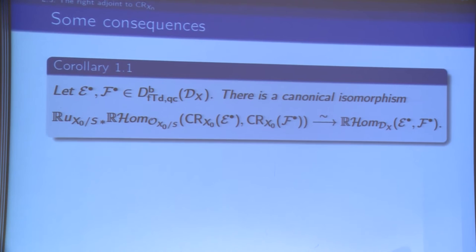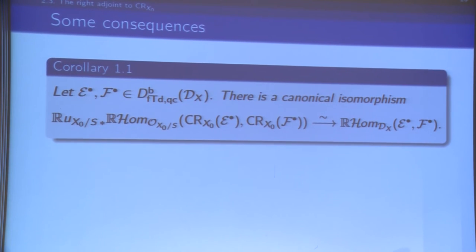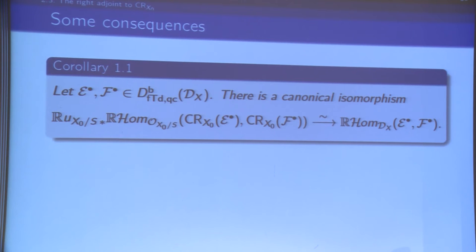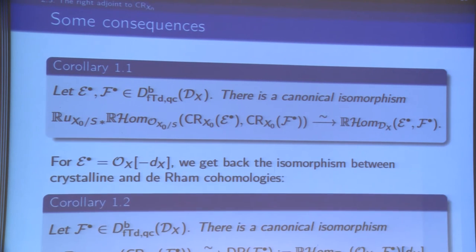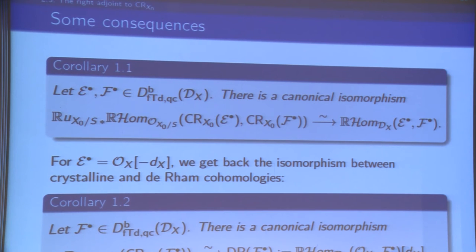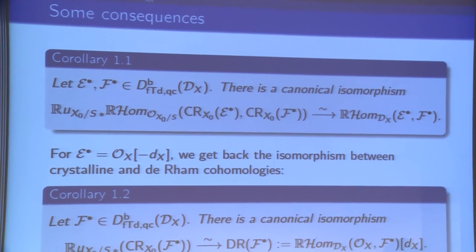As a corollary, if you have two complexes which are of finite tor dimension and quasi-coherent over D_X, the projection of R Hom over O_{X_0/S} is R Hom over D. This contains as a particular case the comparison with de Rham cohomology: if you take E^• = O_X(−d_X), the formula gives the de Rham complex of the complex of D-modules F^•, as defined in D-module theory, which can be identified with the usual de Rham complex.